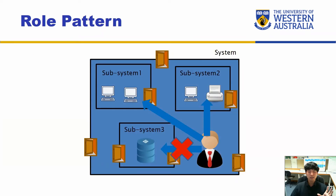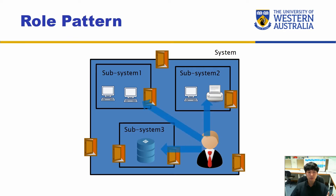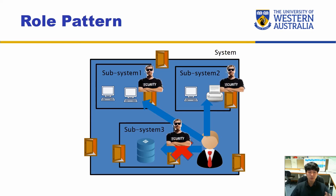When we depict the role pattern, it looks like this, where certain users may or may not have access to certain components of the system. To actually realize this, we need to have checkpoints enabled for those places — that's where the role-based pattern has some overlap with checkpoints. However, those checkpoints only need to be implemented where role-based pattern access is required.